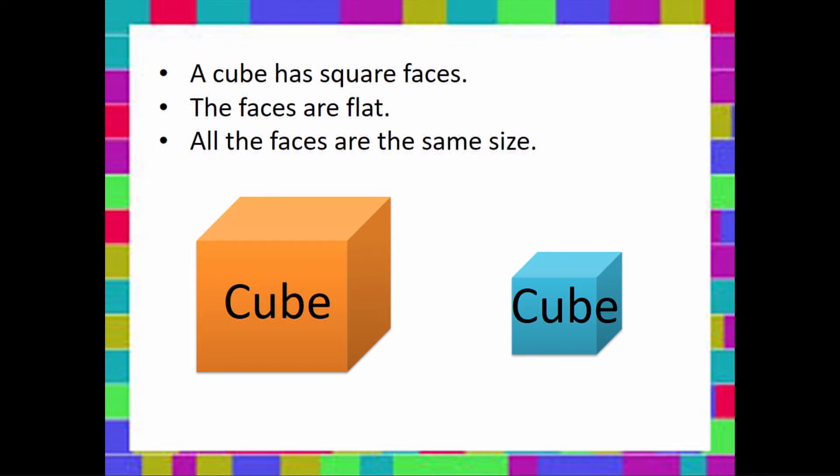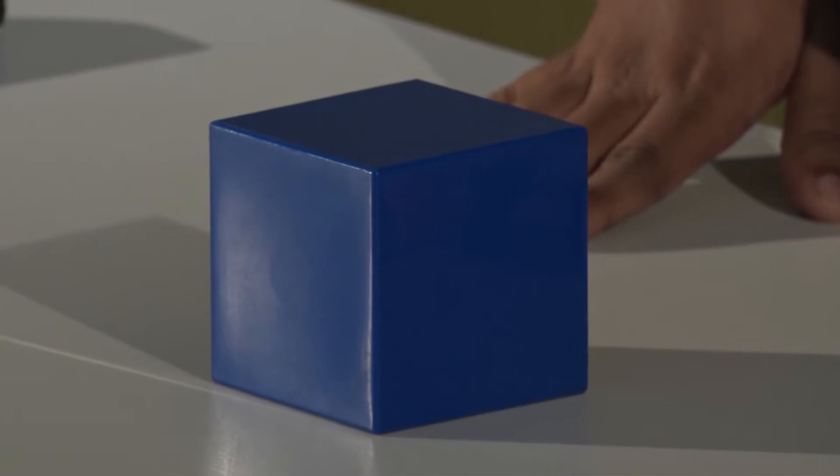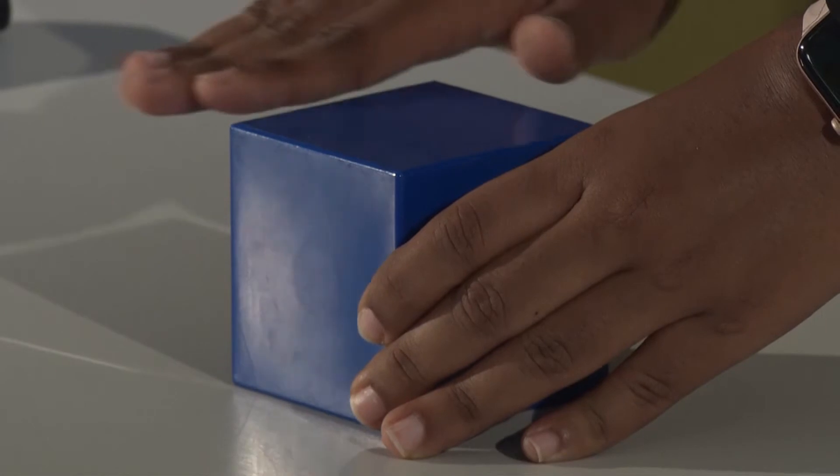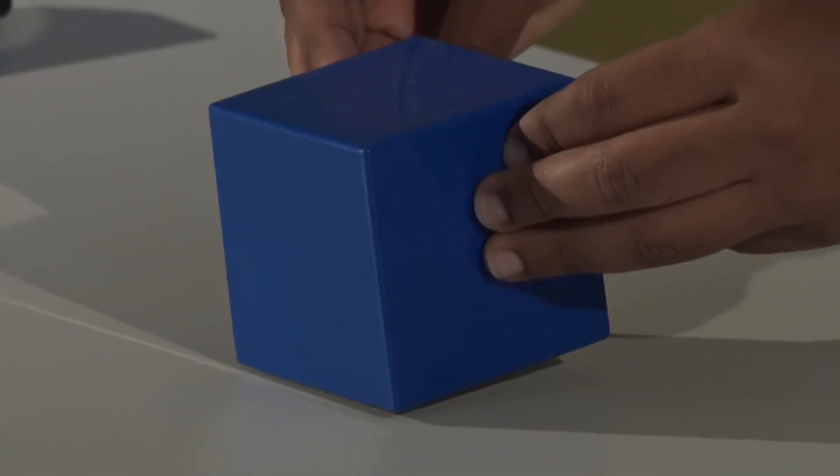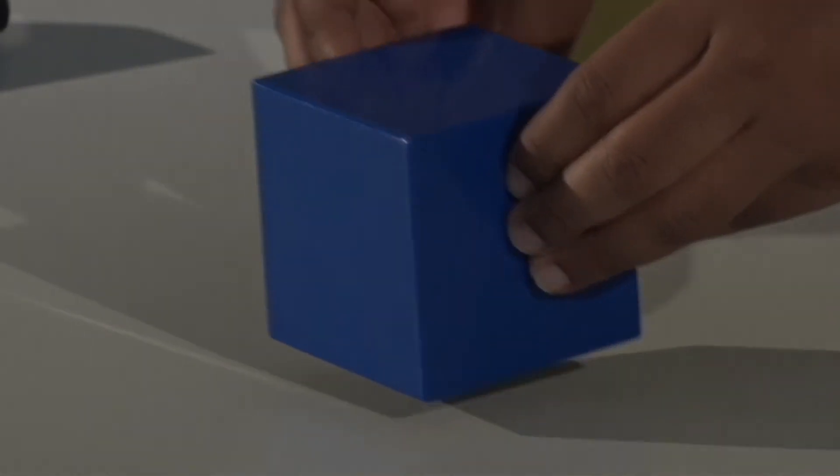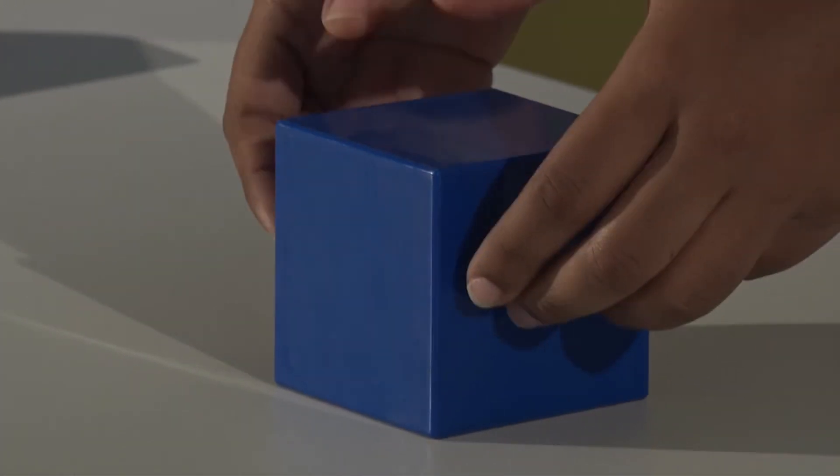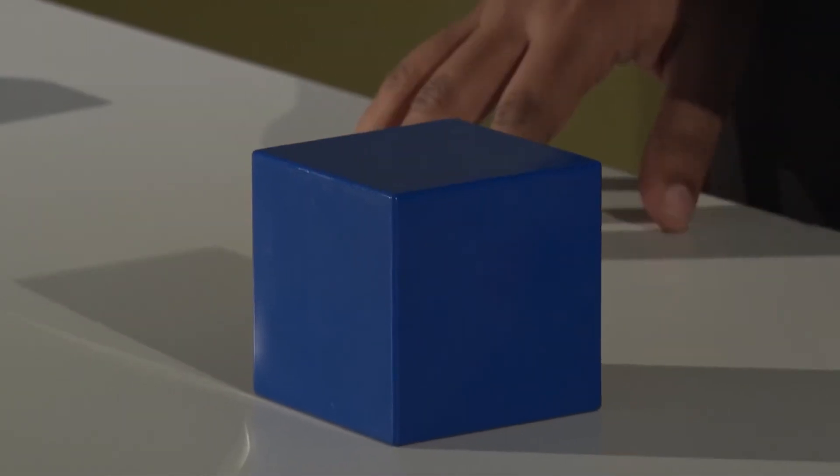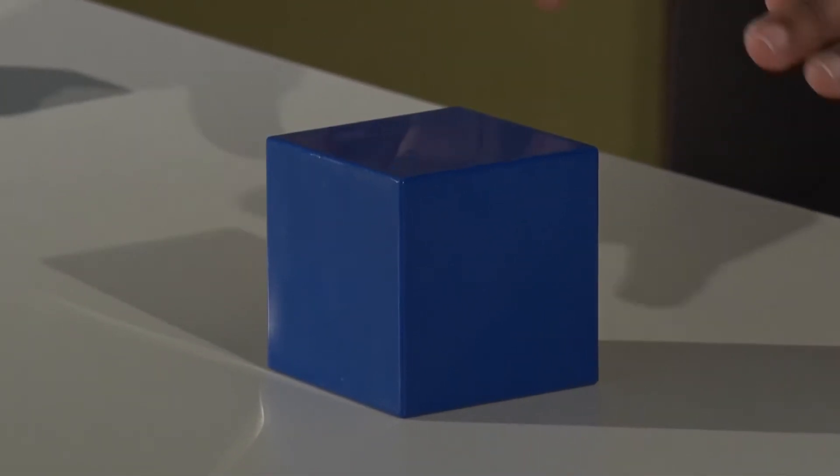Let's talk about cubes. A cube has square faces. The faces are flat. All the faces are the same size. So here I have a cube. What do you notice about it? That's right, the faces are flat.